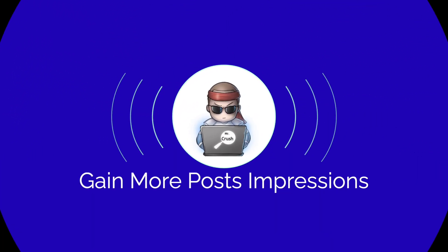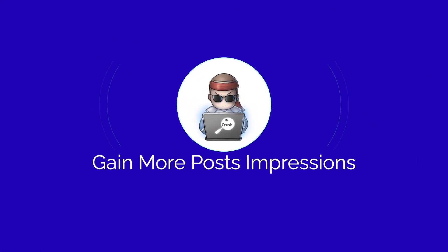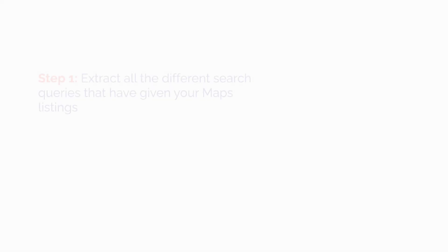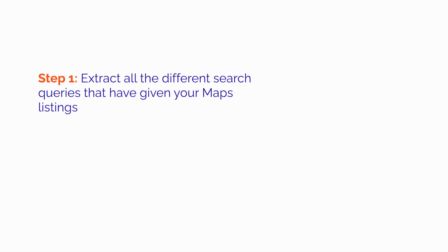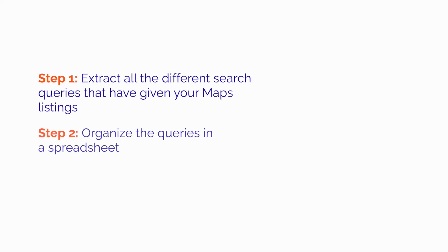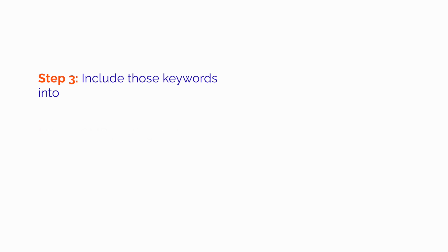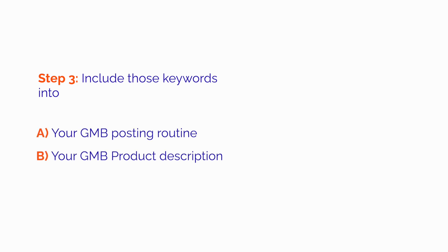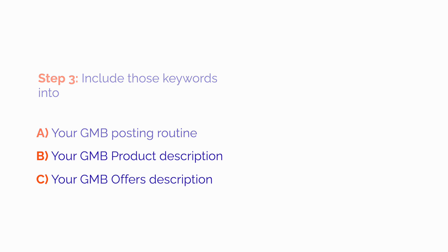To gain more post impressions: Step 1 — extract all the different search queries that have given your Maps listing visibility. Step 2 — organize the queries in a spreadsheet. Step 3 — include those keywords into your GMB posting routine, your GMB product description, and your GMB offers description.